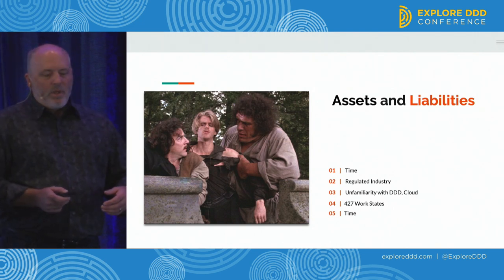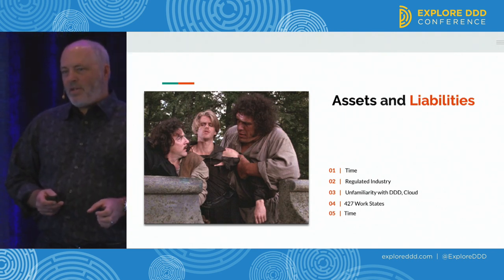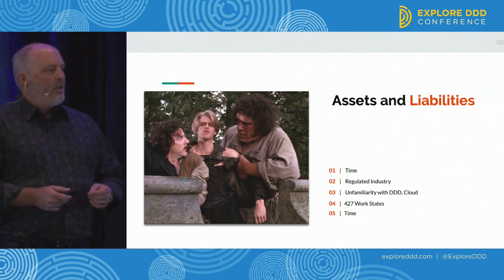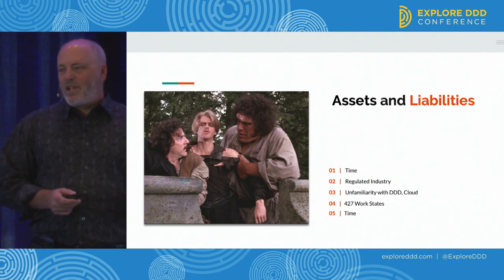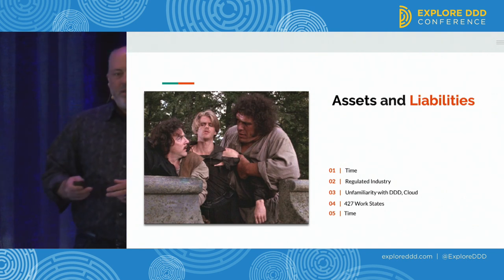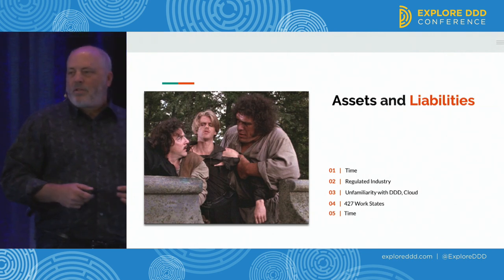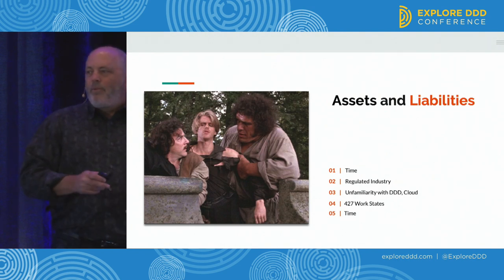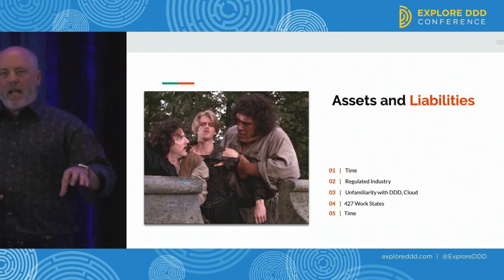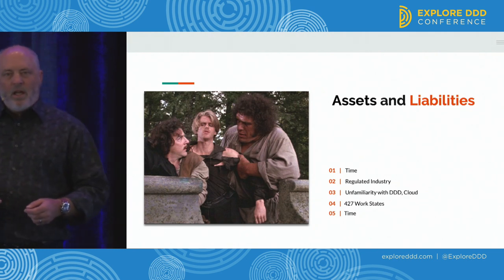The teams were unfamiliar with DDD and cloud — how do we level them up? And there were 427 work states in this system. Mainframe systems often use CICS transactions and COBOL programs to move things from one state to the next. For this one space — customer onboarding: loan applications, credit cards — there were 427 different possible states that an application could be in, meaning 427 COBOL programs.